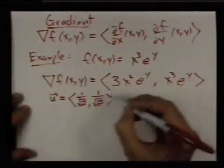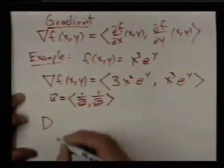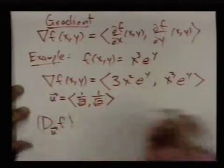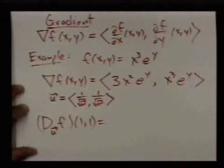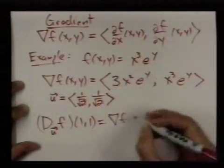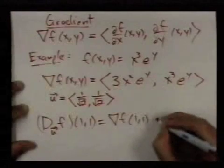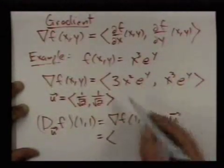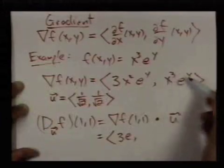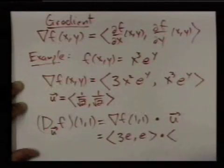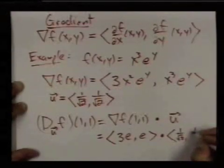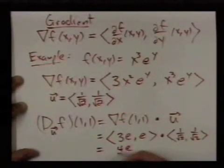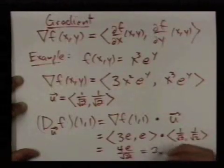We always use unit vectors with directional derivatives. To find the directional derivative of F at point (1,1) in the direction U = ⟨1/√2, 1/√2⟩, we compute ∇f(1,1) · U. Plugging in, we get ⟨3e, e⟩ · ⟨1/√2, 1/√2⟩ = 4e/√2 = 2√2e.